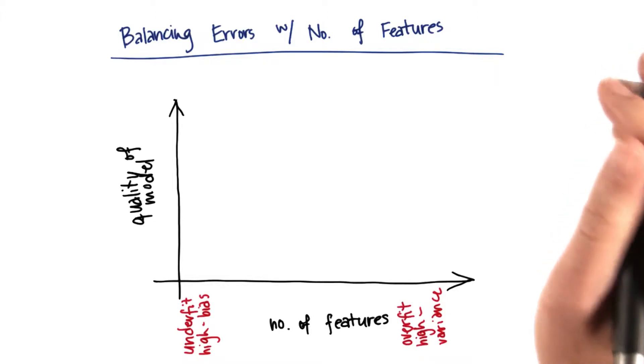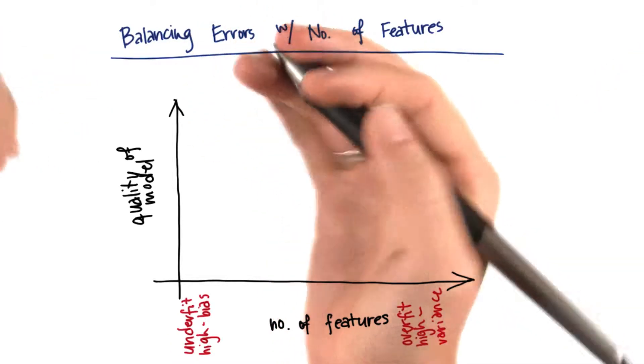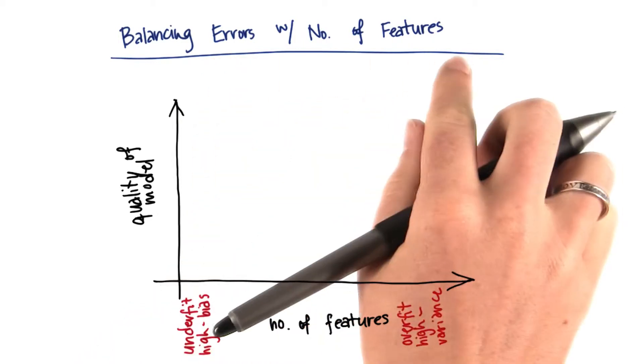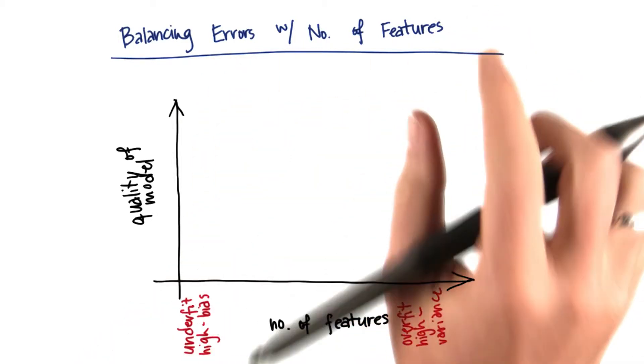Here's another way of thinking about this trade-off. We want to balance the errors that our regression gives us with the number of features that are required to get those errors.